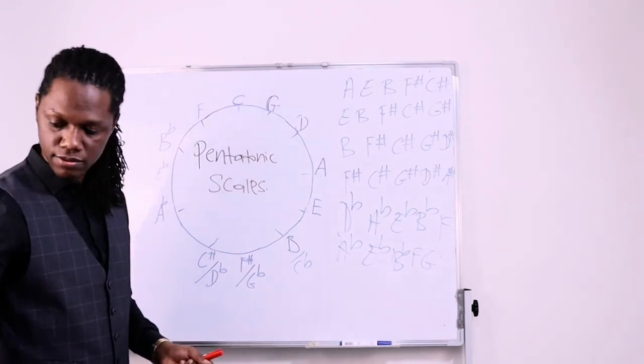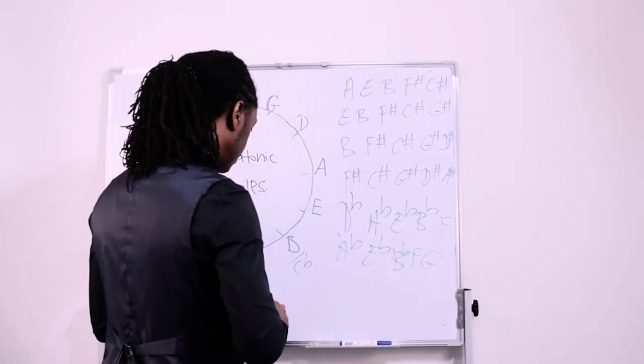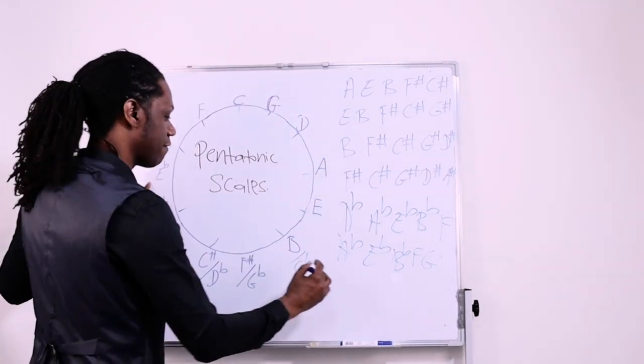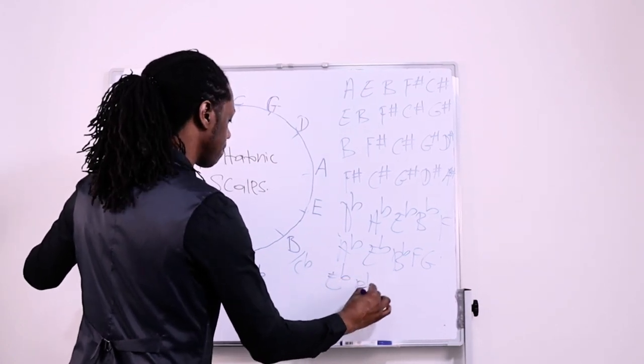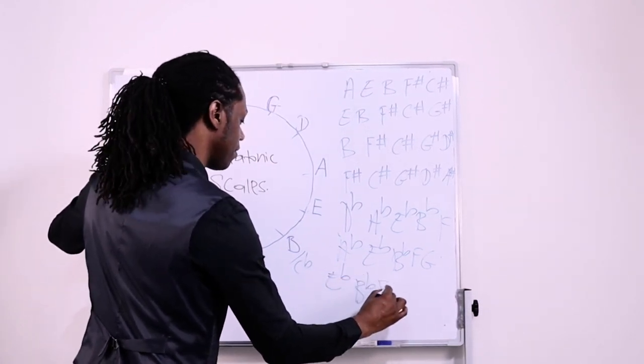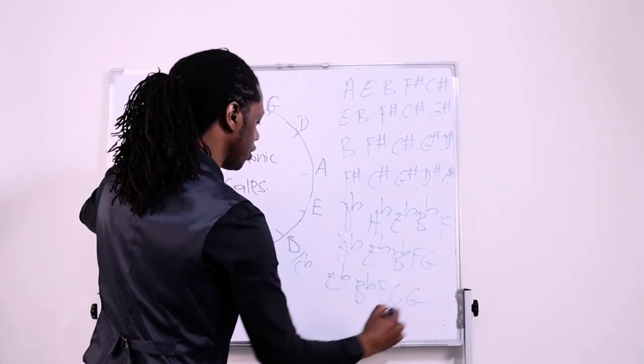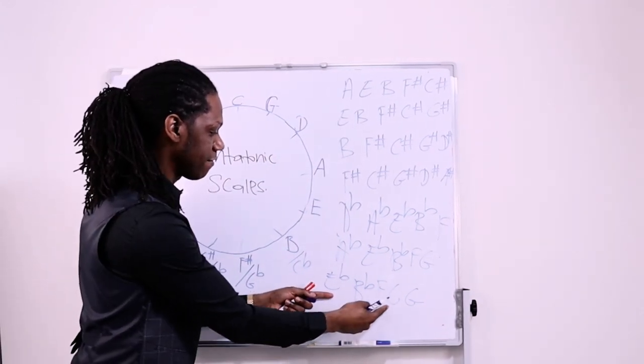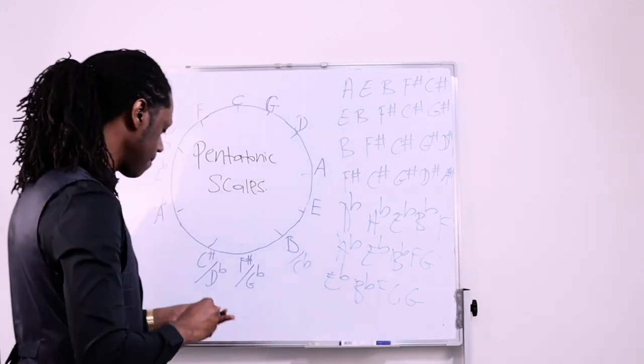Okay? How about E flat? Yes, we can do the same thing. E flat. Five notes. One, two, three, four, five. So, we have E flat, we have B flat, we have F, we have C, and we have G. If you reorganize that, that is going to be E flat, F, G, B flat, and C. Okay?